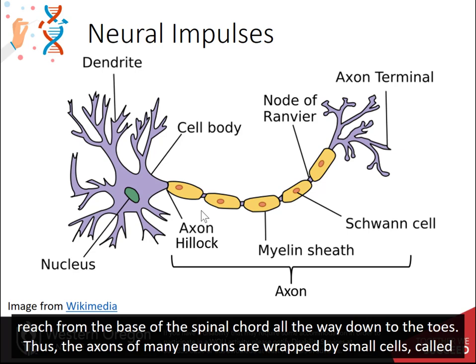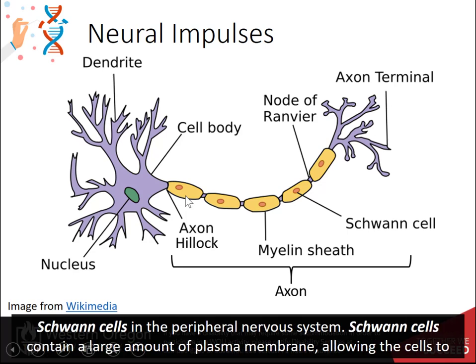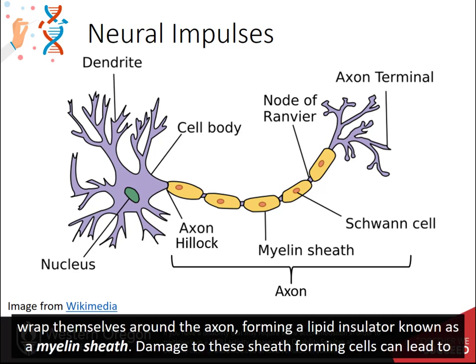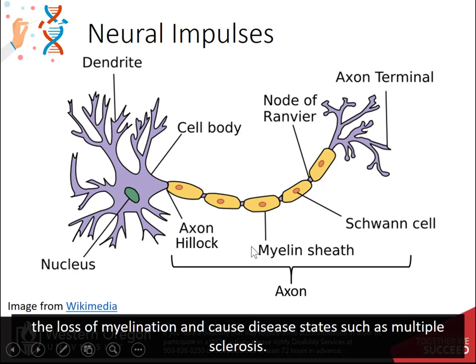The axons of many neurons are wrapped by small cells called Schwann cells in the peripheral nervous system. Schwann cells contain a large amount of plasma membrane, allowing the cells to wrap themselves around the axon. This forms a lipid insulator known as a myelin sheath. Damage to these sheath-forming cells can lead to the loss of myelination and cause disease states such as multiple sclerosis.